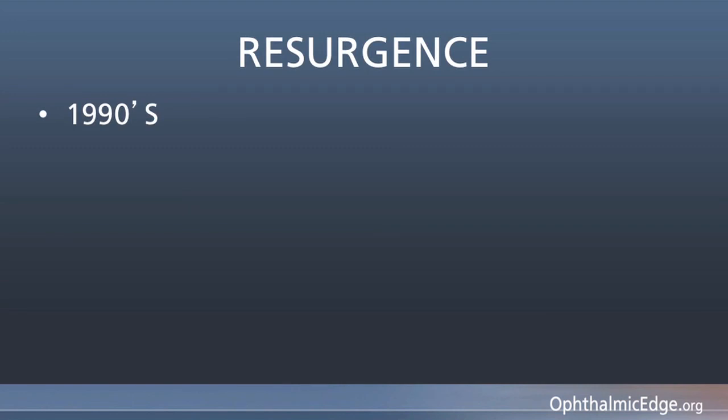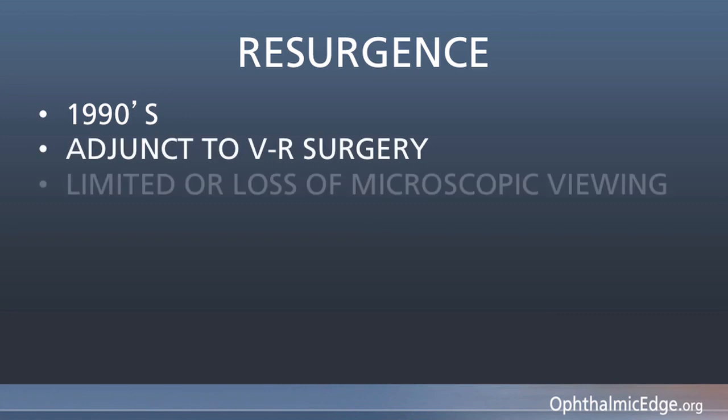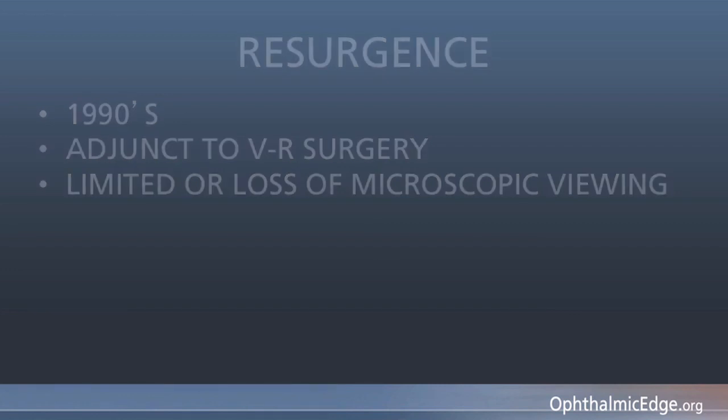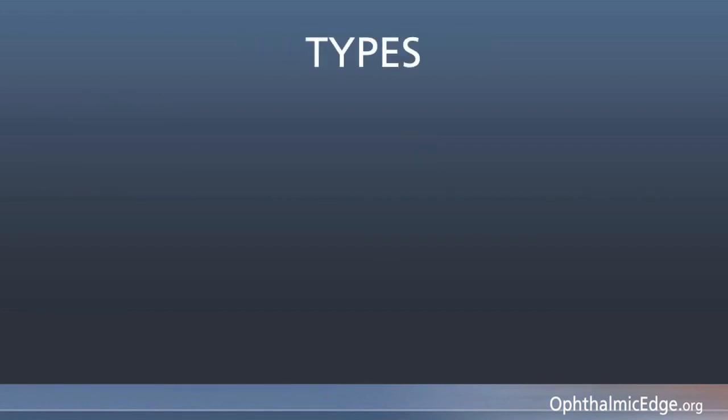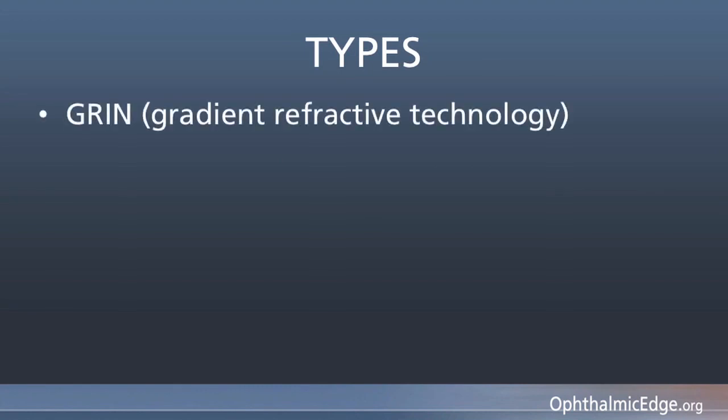During this time, it was looked upon as an adjunct of vitreoretinal surgery where there was limited or loss of microscopic viewing. Two types of scopes were developed. One was a GRIN scope, a gradient index of refraction scope, which was basically a glass rod with a closely attached camera. This scope was quite large, about the size of a FACO handpiece, but produced a beautiful image with limited peripheral view.